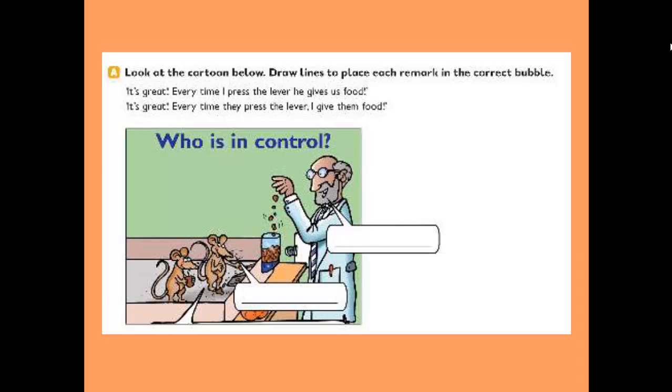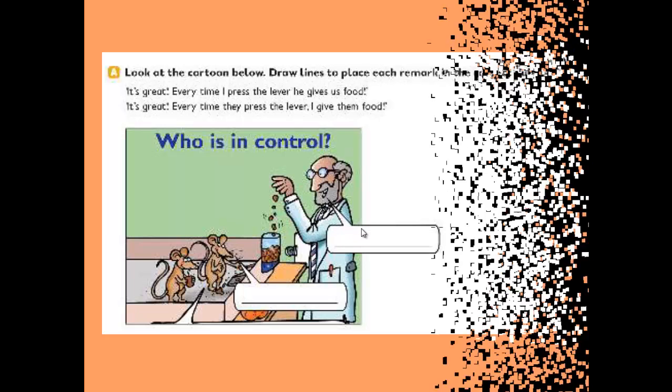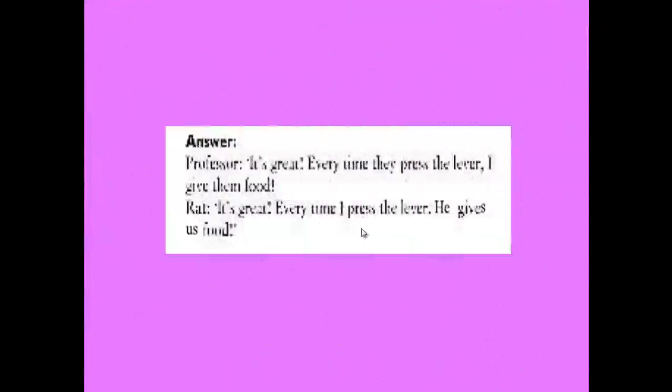Here the first remark is said by the mouse, and the second one is said by the scientist. So here we can put this sentence, the first one we put it here in this bubble, whereas the second one, it's great every time they press the lever I give them food, we put this in the bubble of the scientist. Now let's do the following task, task number B.